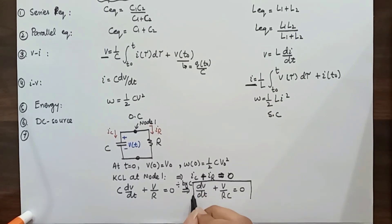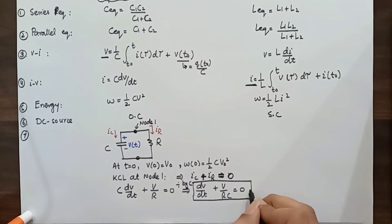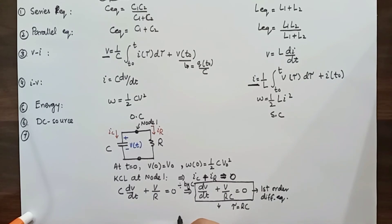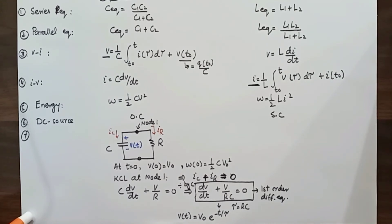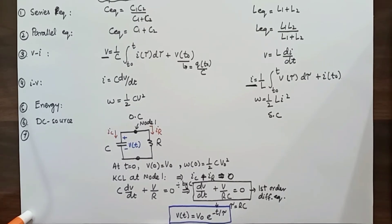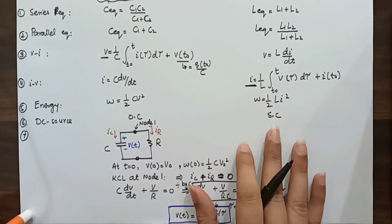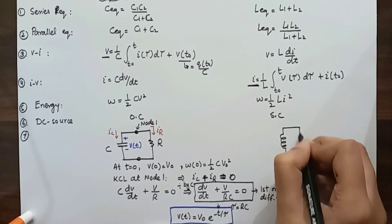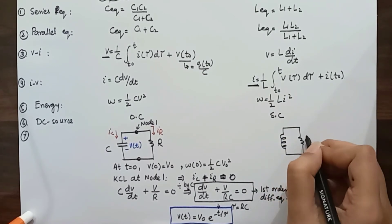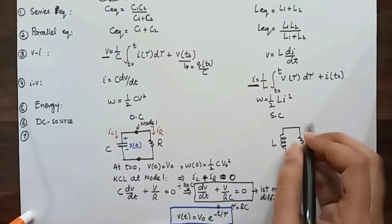This is a first-order differential equation because only the first derivative of voltage is involved. The time constant τ = RC. By rearranging and integrating, we get: v(t) = V₀ × e^(−t/τ). This is the natural response of the capacitor circuit — it depends on initial stored energy, not on any external voltage source.